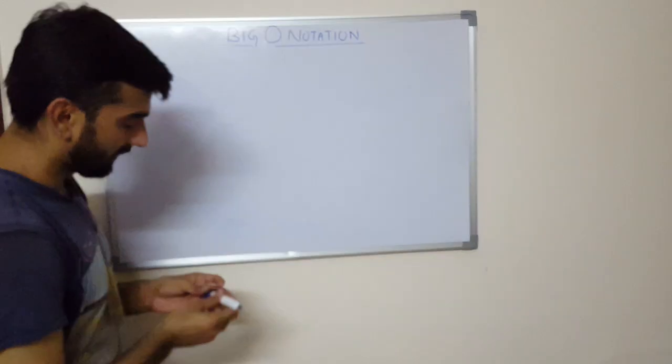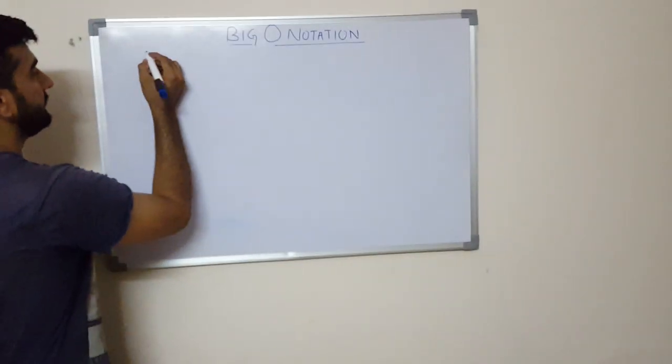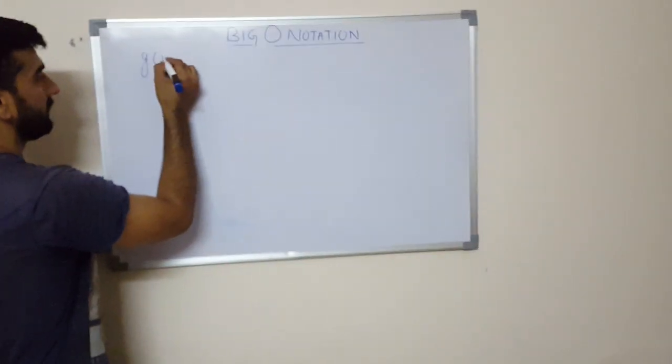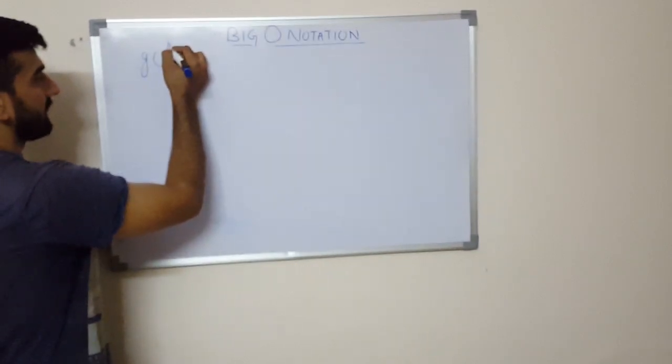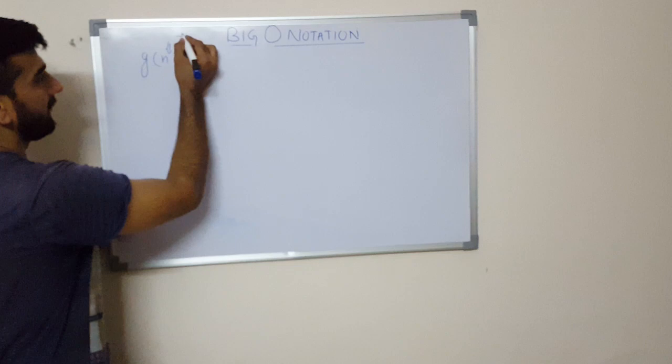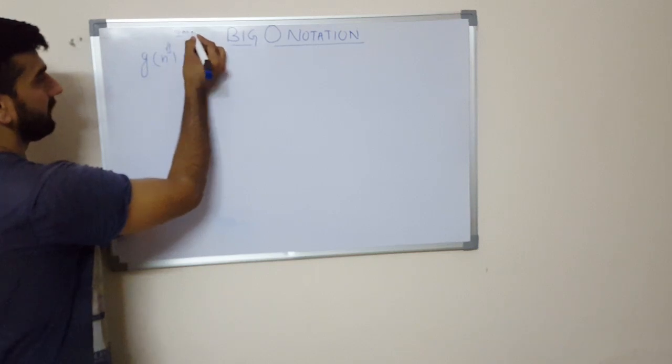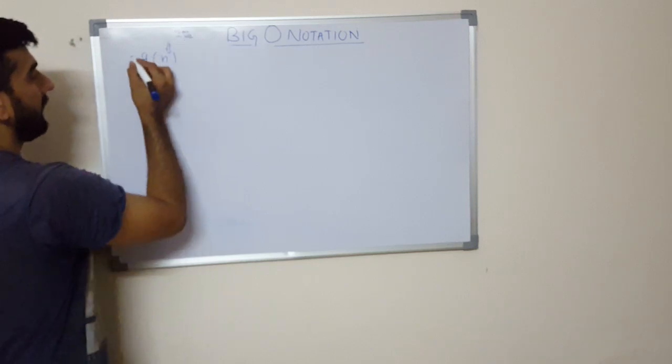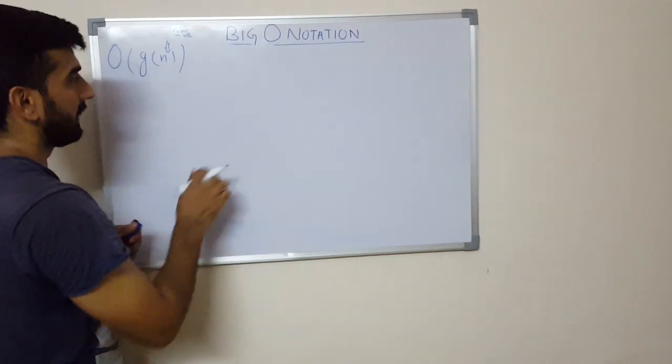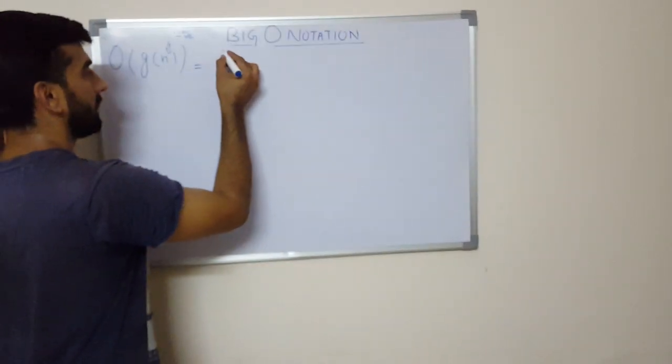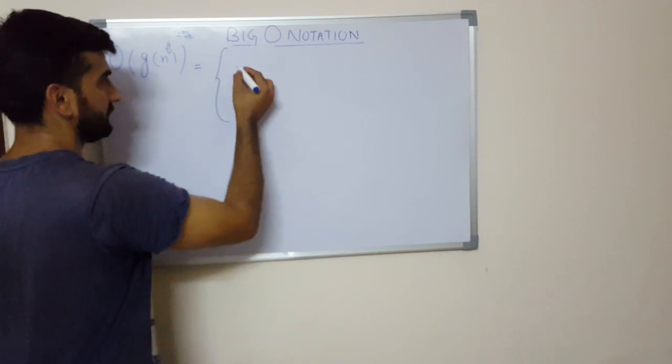So let us assume that there is a function, a non-negative function g(n), which takes n as a non-negative value as an input. And if we have to calculate the Big O of this g(n), then it will be a set of functions f(n).